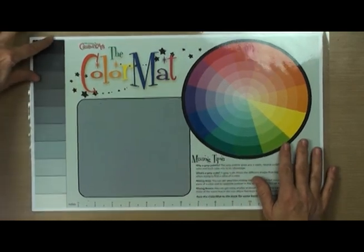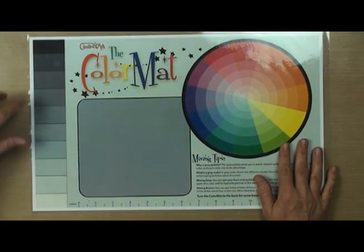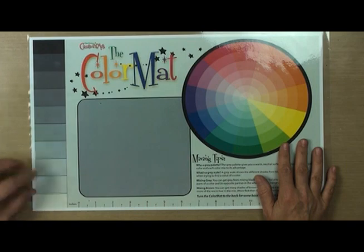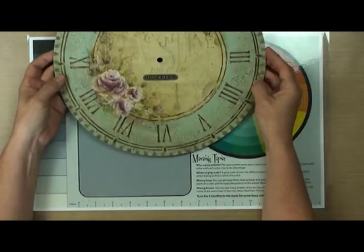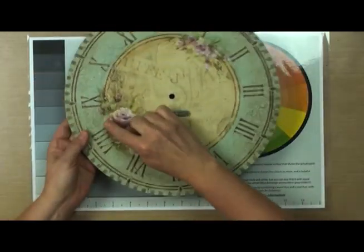The color mixing mat has a grayscale on one side so that you can tell how dark or light your colors are. When you're doing shading or highlighting and things like that, you want to isolate your values.